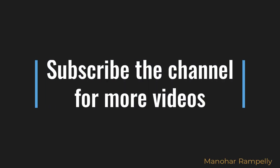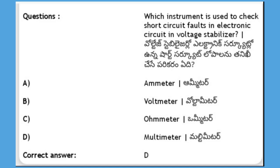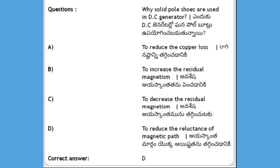Which instrument is used to check short circuit fault in an electronic circuit or voltage stabilizer? Options: voltmeter, ohm meter, multimeter. The answer is D, multimeter.